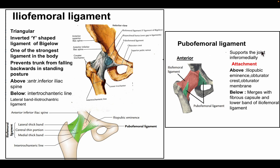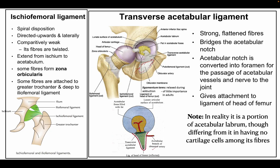The pubofemoral ligament supports the joint from the inferomedial aspect. Above, it is attached to the iliopubic eminence — the junction between the ilium and the pubic bone — to the obturator crest, and also to the obturator membrane. Below, it merges with the fibrous capsule and also with the lower band of the iliofemoral ligament.